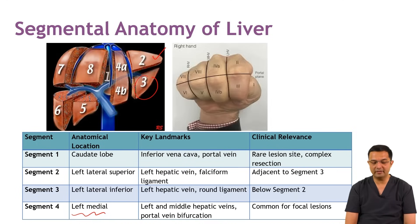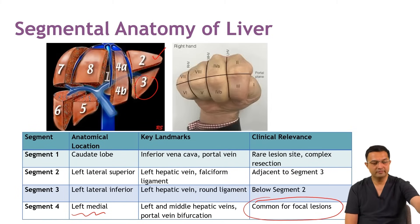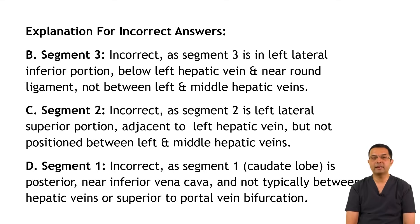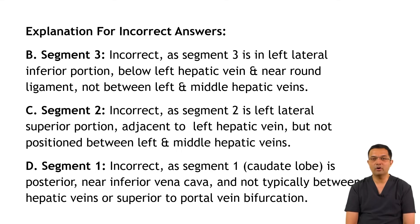Segment 4 lies between the left hepatic vein and middle hepatic vein, above the portal vein bifurcation, and lesions are common in this segment. Option Segment 3 is incorrect as it is in the left lateral inferior portion, below the left hepatic vein, near the round ligament — not between the left and middle hepatic veins. Segment 2 is incorrect as it is left lateral superior, adjacent to the left hepatic vein. Segment 1 is incorrect because the caudate lobe is posterior near the IVC and is not typically located between the hepatic veins or superior to the portal vein bifurcation.